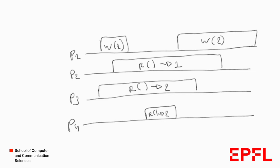Can this be an atomic register? The write of value 2 takes place such that any linearization point would be somewhere in its interval, while the read that returns 2 occurs before that. In other words, the register reads 2 before the write of 2 takes place. This is not expected from a sequential register, so this execution cannot be from an atomic register.